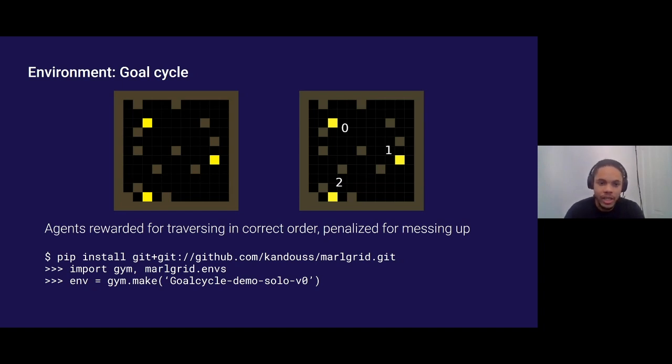A particular scenario that I spent a lot of time working with, I call goal cycle. In this environment, there are a number of goal tiles and agents in the environment are rewarded for traversing them in a certain order and they're penalized anytime they mess up that order. One can experiment with this particular environment by installing it as a Python package from GitHub.